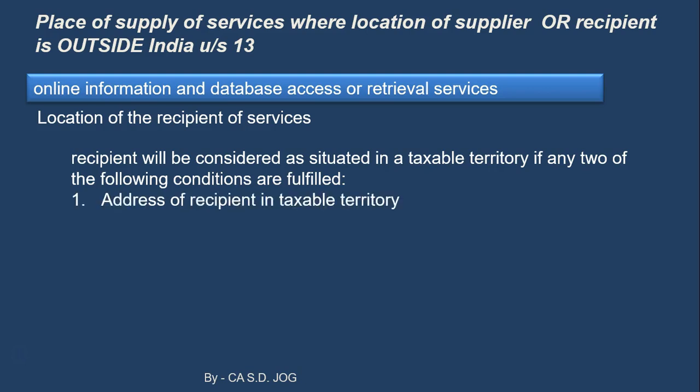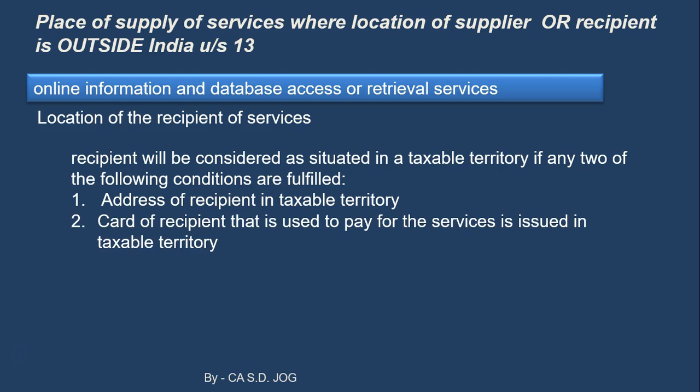Condition two: card of recipient that is issued in taxable territory. Say you want to purchase some online videos etc., you want to download something, and these are paid. So you use a debit card or credit card. The card of the recipient that is used is issued in taxable territory — if that card is issued by an Indian bank in India, then this second category is considered: the recipient will be considered situated in taxable territory. Condition three: billing address. Probably your actual address is not available with the supplier, but when you order something on any website, they ask you for your billing address, and in that you mention the address of Mumbai, say for example. So billing address is taxable territory. Condition four: internet protocol address — IP address. For every computer, every device, we have this IP address. If that IP address is in India, that is another condition. Condition five: bank of recipient in taxable territory. In the second point we discussed card payment, but in point five, if you are not making a card payment — debit or credit card — but are making payment by online means such as net banking, then the bank of the recipient being in India satisfies this condition.